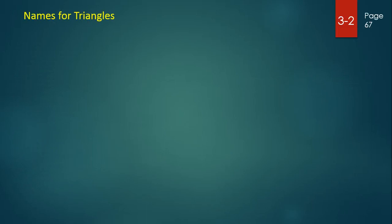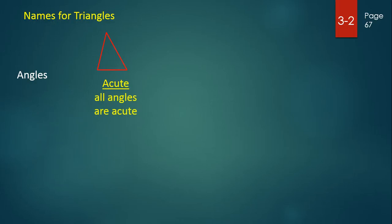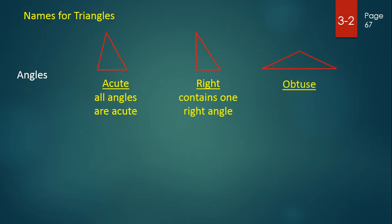When we're naming triangles, we can name them by the angles that they have. For example, this is an acute triangle because all of the angles are acute. This is a right triangle because it contains one right angle. And this is an obtuse triangle because it contains one obtuse angle.